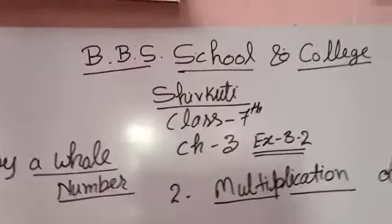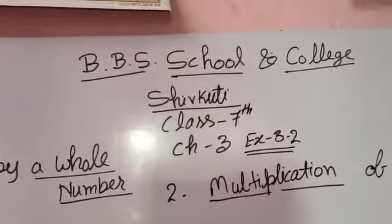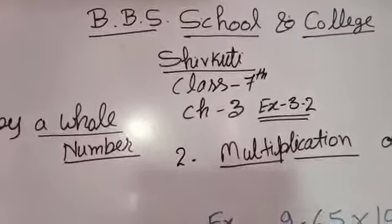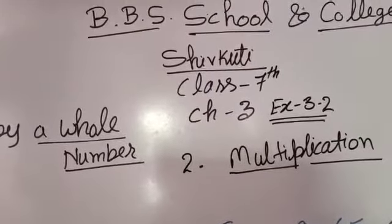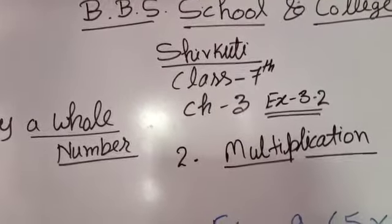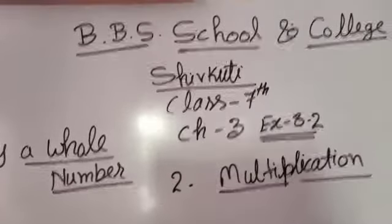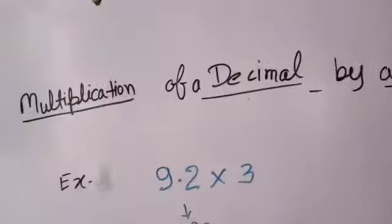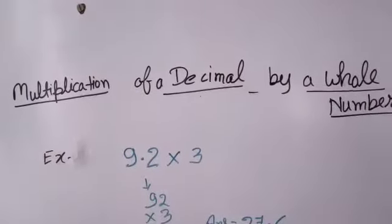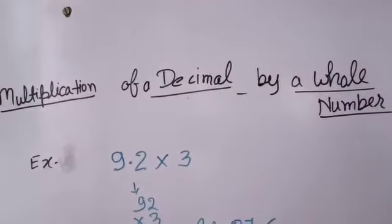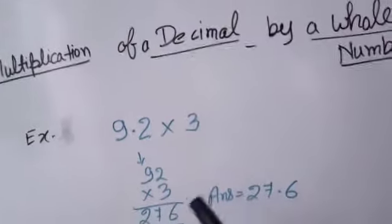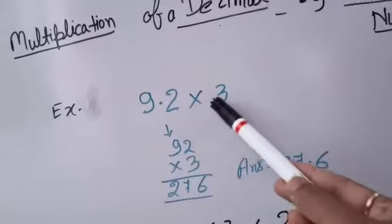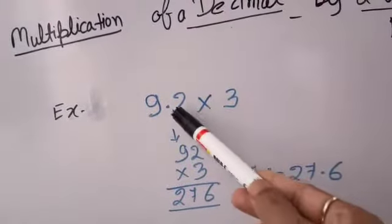Good morning students. This is your e-learning class from VVC School and College, for class 7th. Today I have to explain how to solve Chapter 3, Exercise 3.2. In this exercise we will learn how to solve multiplication of a decimal by a whole number. To multiply a decimal by a whole number, some examples are given.